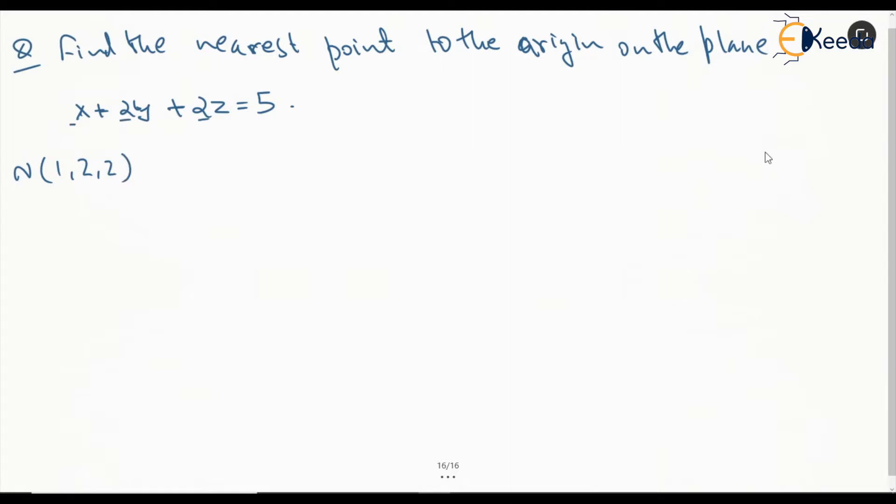So obviously, this is not a unit normal vector. This equation is of the form r dot n equals d whereas, the standard equation would have been r dot n cap equal to d. When we divide both sides with the magnitude of n, we will get this. So, the magnitude of n is nothing but square root of 1 squared plus 2 squared plus 2 squared, which is 3.